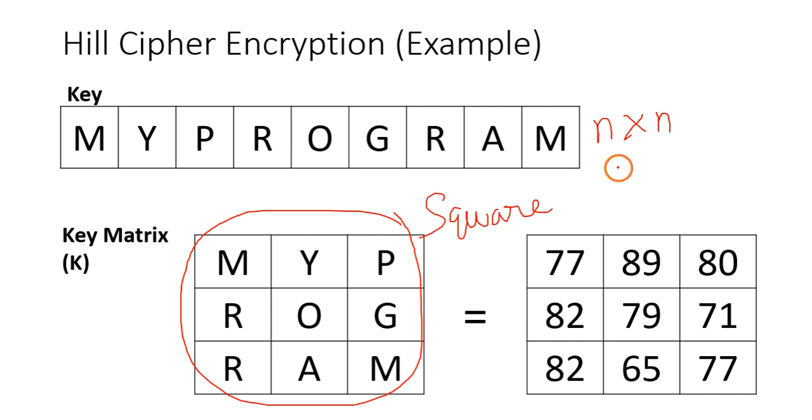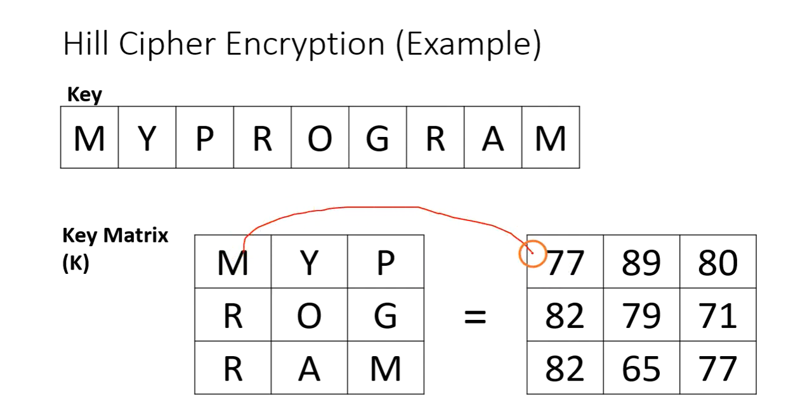What are these things? These are ASCII values. ASCII value of Y is 89, ASCII value of P is 80, and so on. Each character is represented as ASCII value, ASCII number.